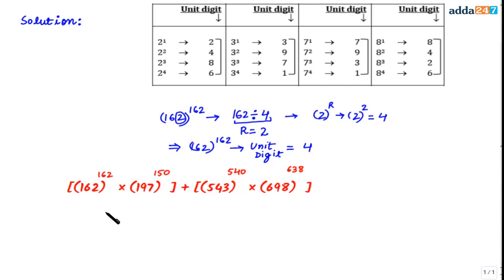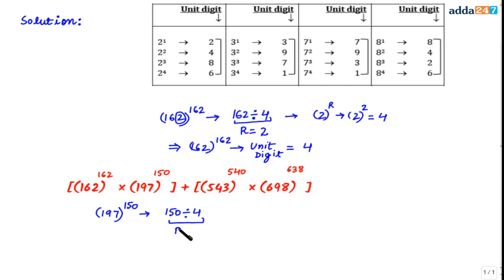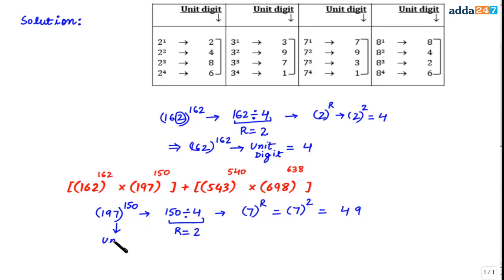Next, 197 raised to power 150. The units digit is 7. We divide the power 150 by 4 to get the remainder: 150 ÷ 4 gives remainder 2. So we raise 7 to the power 2: 7² = 49. Therefore, the units digit of 197 raised to power 150 is 9.